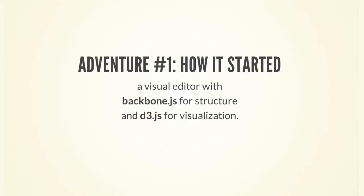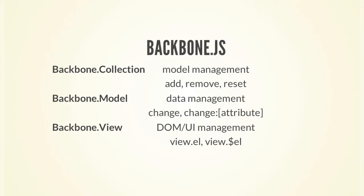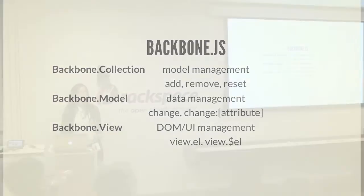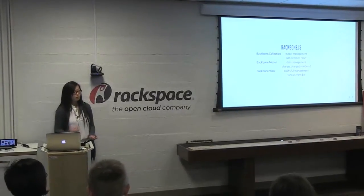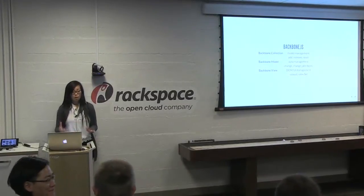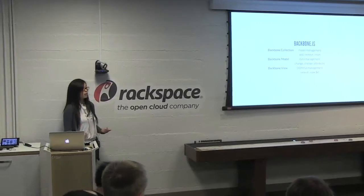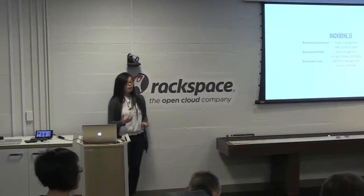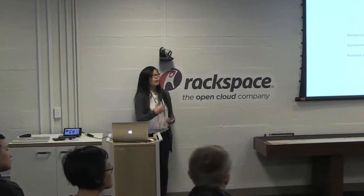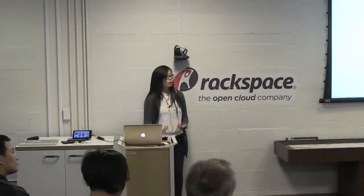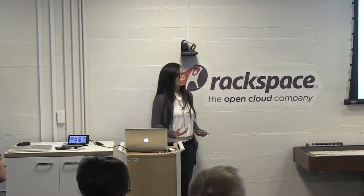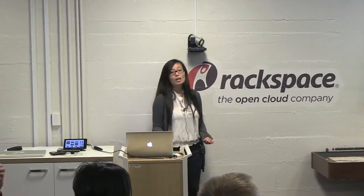It all started when I was given an assignment at work to create a visual editor with Backbone for structure and D3 for visualizations. Backbone is an MVC library that gives structure to your applications and helps you manage data. Some of the basic components of Backbone are the collection, the model, and the view. The collection helps manage the models, the models manage the data, and the views manage the DOM elements and the user interactions. One of my favorite things about Backbone is the built-in event handlers — for when a model is added to a collection, removed from a collection, or a data attribute is changed on a model.